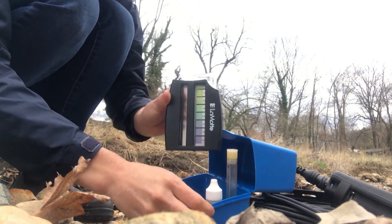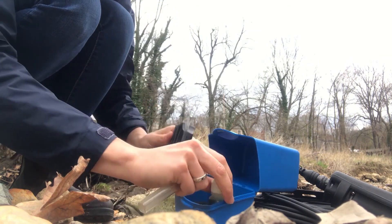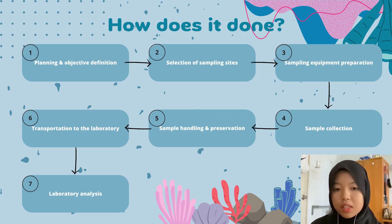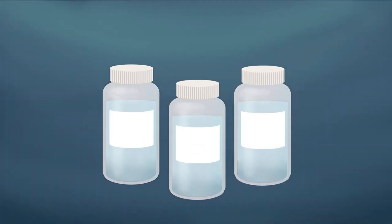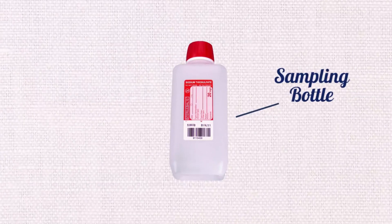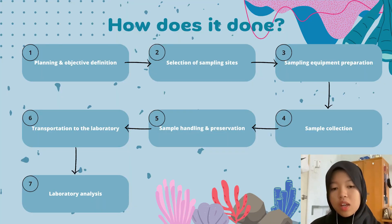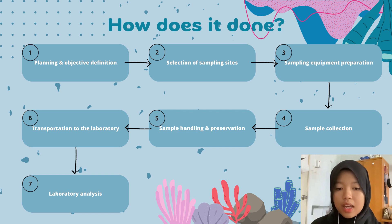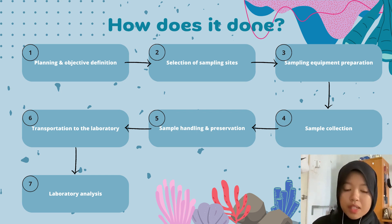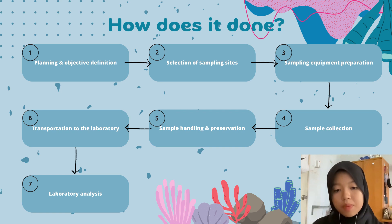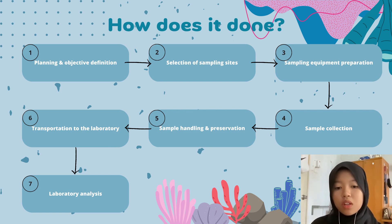Number three: sampling equipment preparation. The sampling equipment used depends on the type of water and the parameters being measured. Common water sampling tools include: Bottles, which must be cleaned, sterilized, and leak-proof containers made of appropriate materials to avoid sample contamination; Dippers, used for collecting surface water samples from streams, lakes, or ponds; Water samplers, which are automated devices used for collecting samples at specific depths in large bodies of water; and Pumps, used for groundwater sampling or in situations where manual collection is challenging.